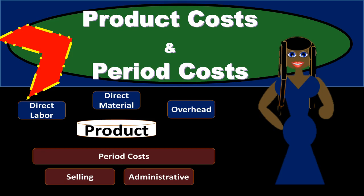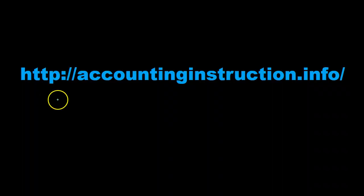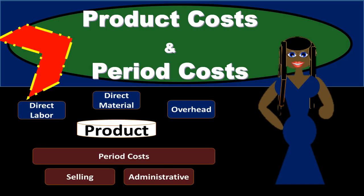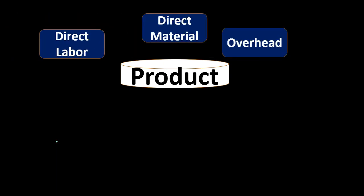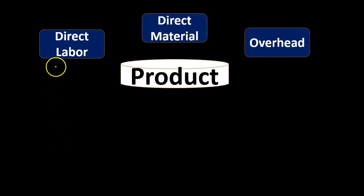In this presentation we will take a look at product costs and period costs. When considering a manufacturing company, we can break out the costs to those that are used to create the product — to create the inventory that we will eventually sell — and those that will not. Product costs are going to include costs of direct labor, direct material, and overhead.